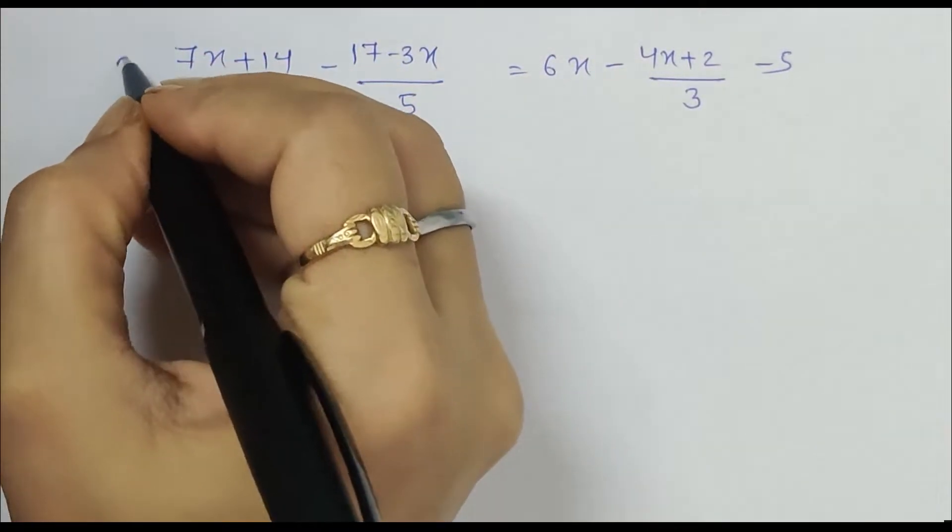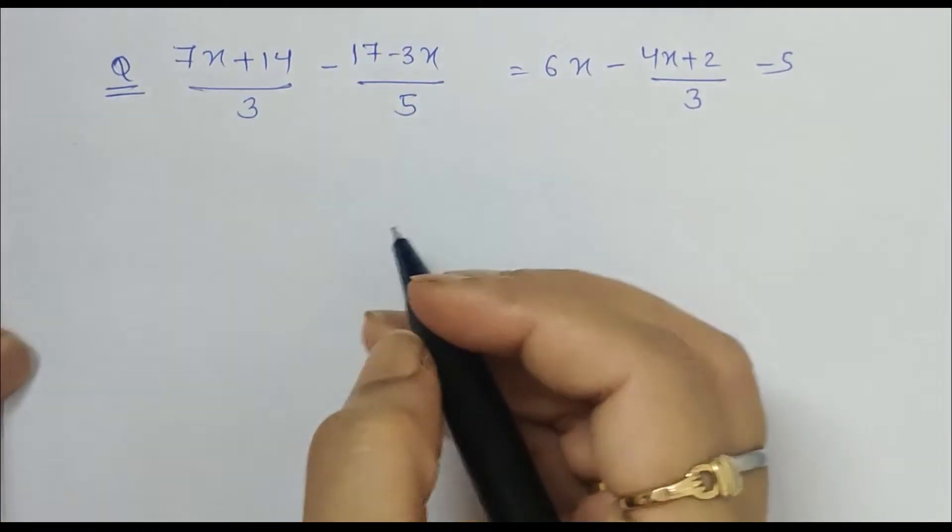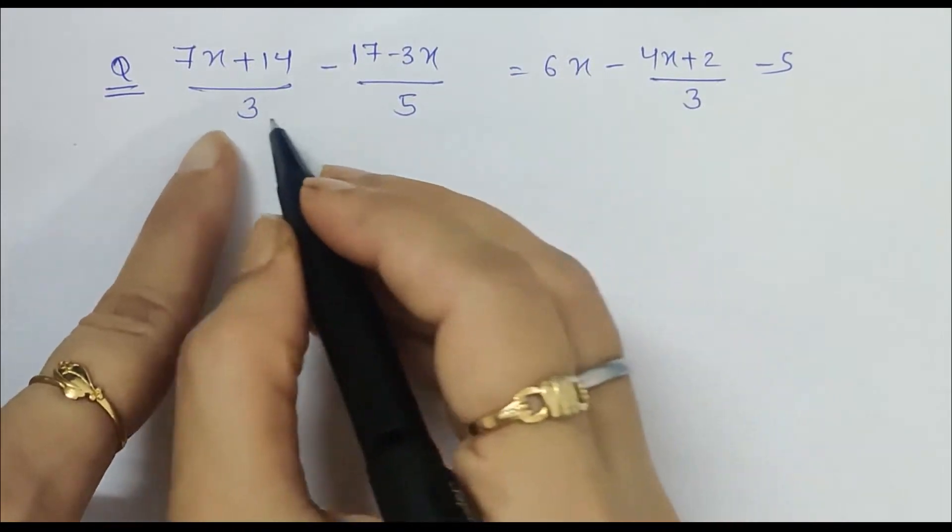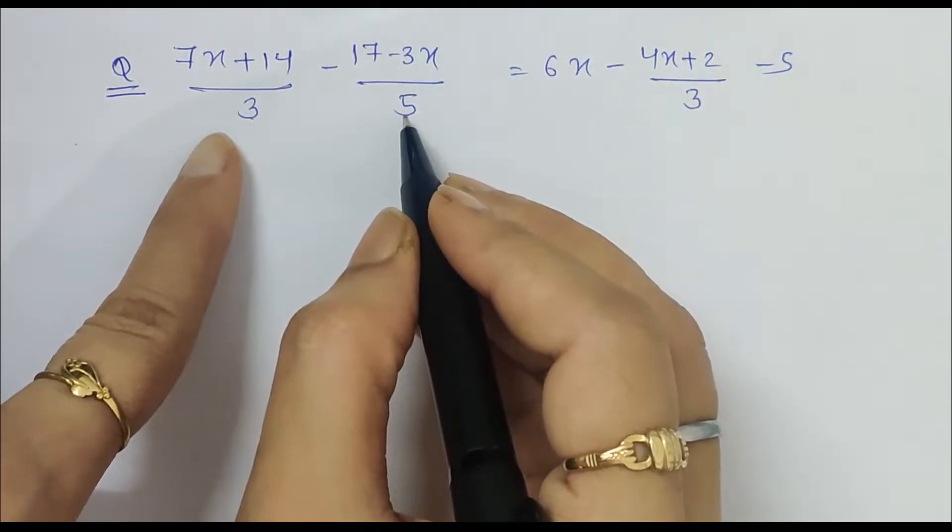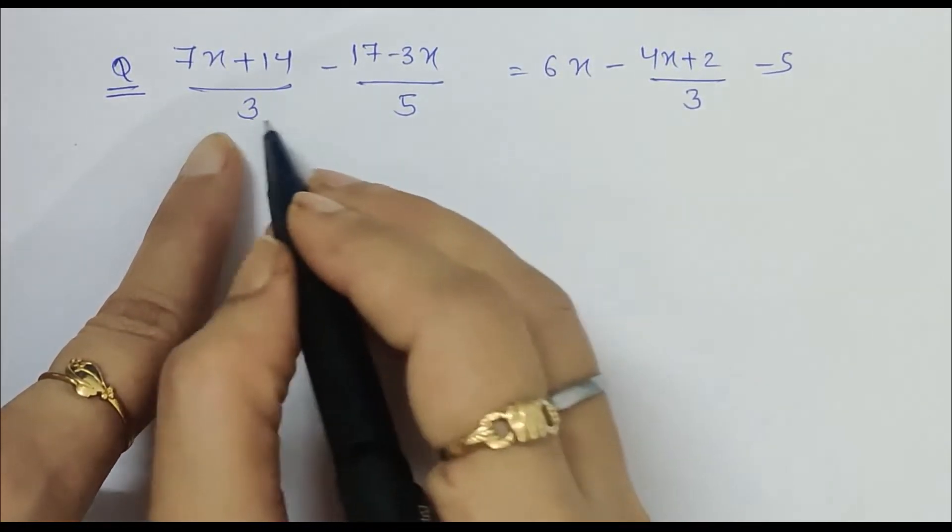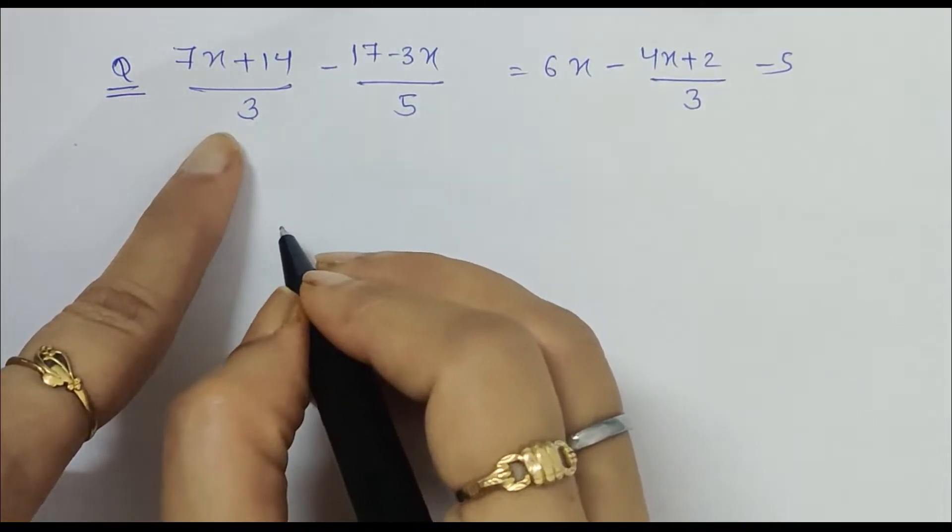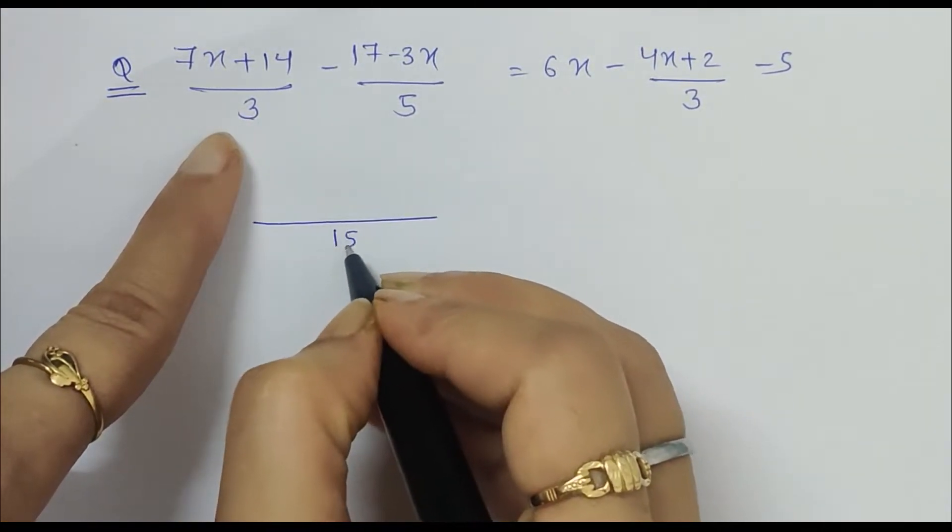Hello friends, let us solve this linear equation in one variable. Here first we have to take the LCM. Since 3 and 5 are co-prime, that means they have no common factor, so they get directly multiplied. So 3 times 5 is 15.